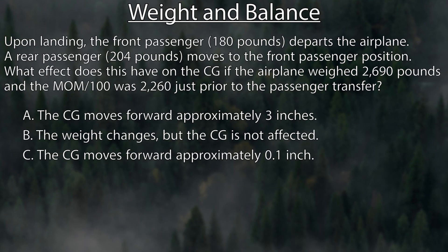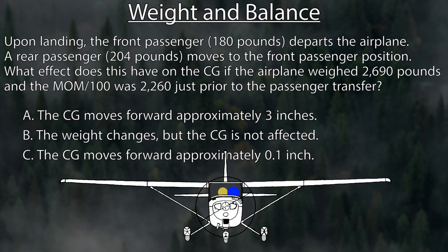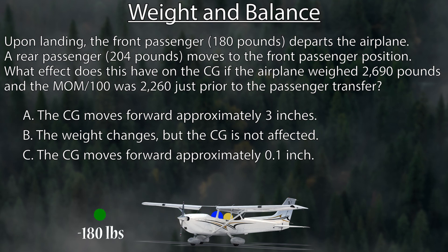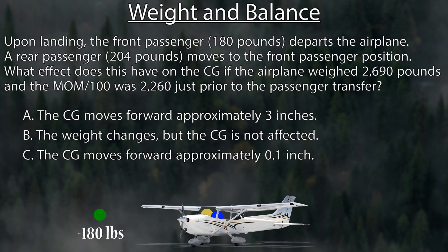Here's a written test question. Upon landing, the front passenger (180 pounds) departs the airplane. A rear passenger (204 pounds) moves to the front passenger position. What effect does this have on the CG if the airplane weighed 2,690 pounds and the moment divided by 100 was 2,260 just prior to the transfer? Without much math, you can tell the weight decreases by 180 pounds and the CG probably moves forward since the back passenger is now in front.